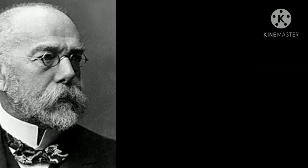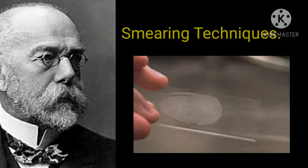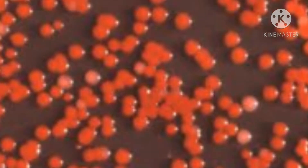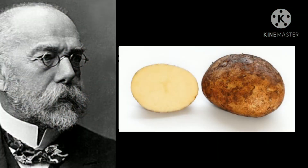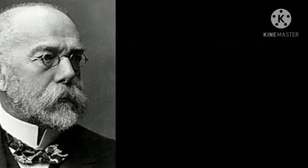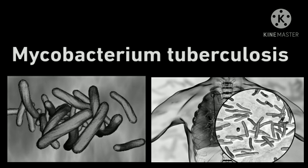Robert Koch introduced staining techniques, smearing techniques, and methods for obtaining bacteria in pure culture using solid media. Koch also invented the apparatus and procedure for the hanging drop technique. He discovered specific causative agents of anthrax, tuberculosis, and cholera.